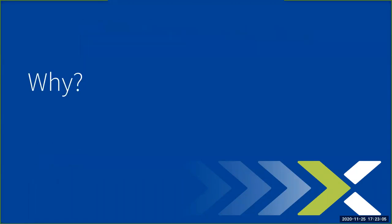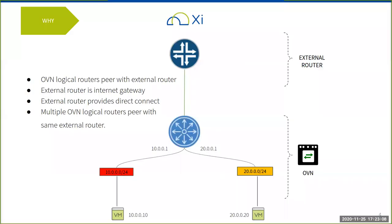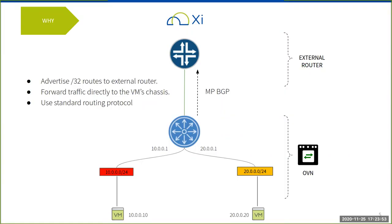So why would we want to do that? Allow me to provide just a little bit of backstory. Nutanix offers a service called XI which is currently aimed at providing disaster recovery as a service. Our tenants replicate VM snapshots into our data centers, and if their primary environment becomes unavailable, they can spin up their workload in our data centers. So we need a multi-tenant network to host that workload, and we use OVN as our network controller for that.